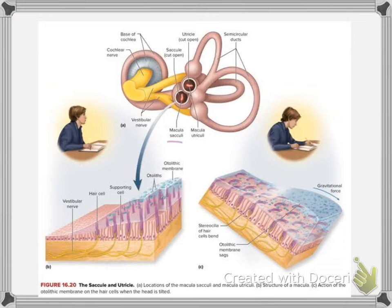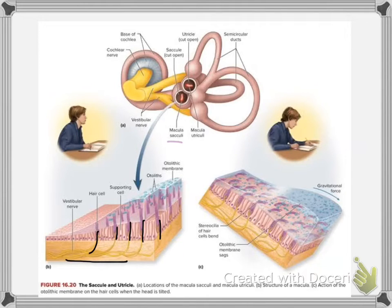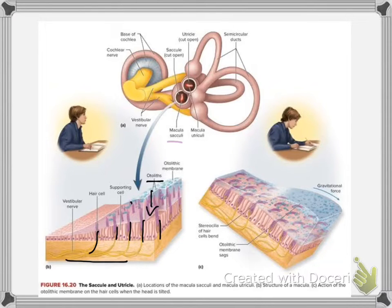In this diagram they have cut open the utricle and saccule so you can see inside. If we take a closer look at what a macula actually looks like, it has nerves that end in hair cells. The hair cells are stimulated to convert the movement of the head into an electrical impulse. What actually stimulates them are tiny stone-like structures called otoliths. Otoliths are sensitive to the Earth's gravitational pull and will be pulled down towards gravity no matter which way the head is facing, stimulating the hair cells accordingly.